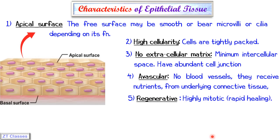The next characteristic is that epithelial tissues are regenerative. Because they are on the top surface, these cells chafe off rapidly, so new cells need to be continuously born. Therefore, these cells are highly mitotic and keep on rapidly dividing themselves to produce new cells.